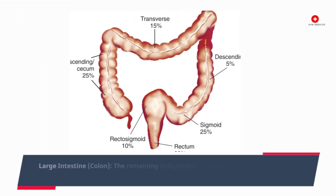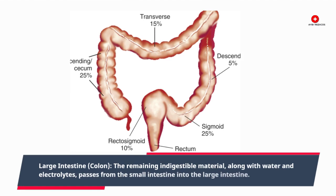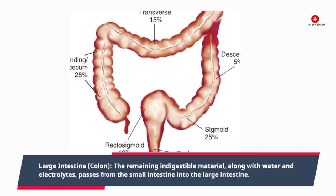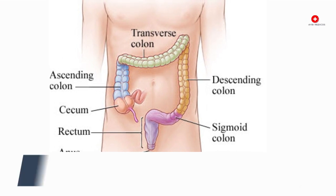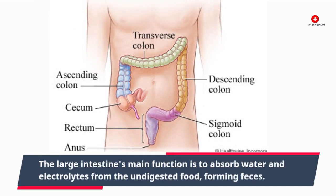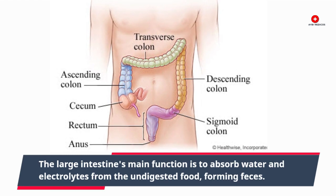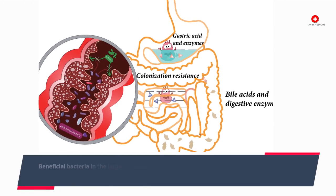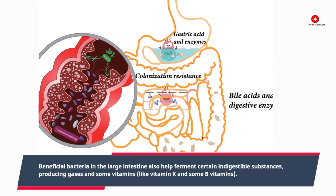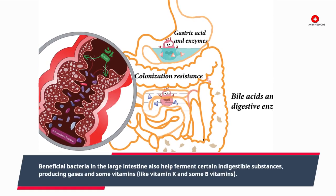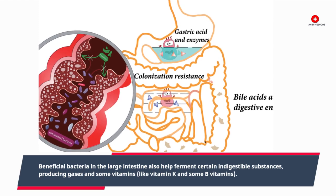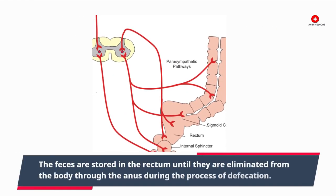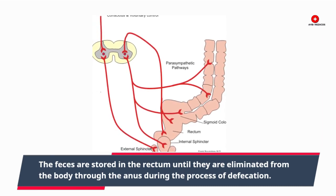Large intestine, colon. The remaining indigestible material, along with water and electrolytes, passes from the small intestine into the large intestine. The large intestine's main function is to absorb water and electrolytes from the undigested food, forming feces. Beneficial bacteria in the large intestine also help ferment certain indigestible substances, producing gases and some vitamins like vitamin K and some B vitamins. The feces are stored in the rectum until they are eliminated from the body through the anus during the process of defecation.